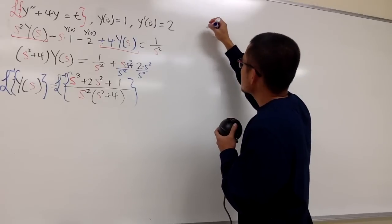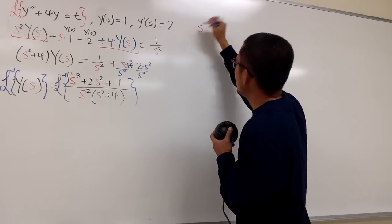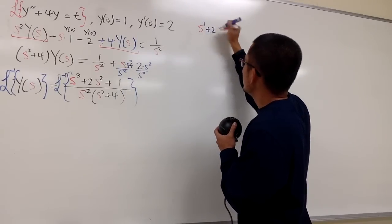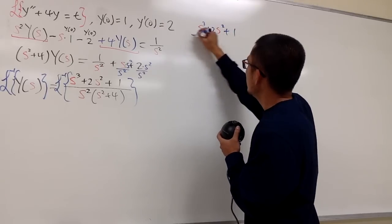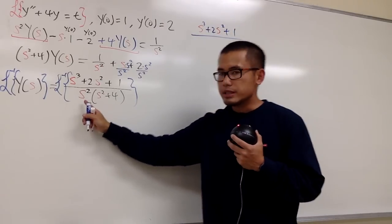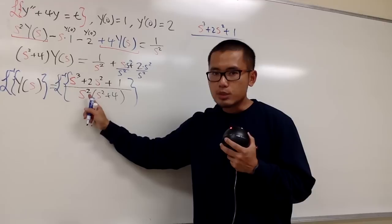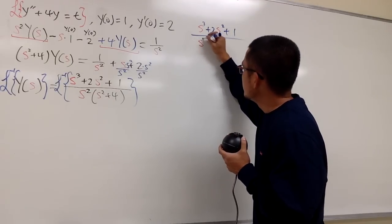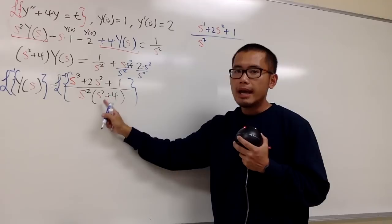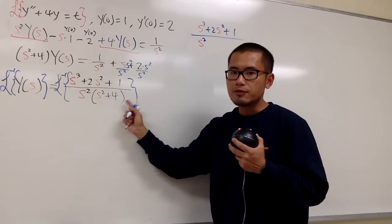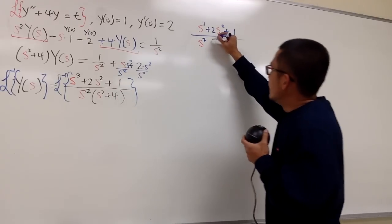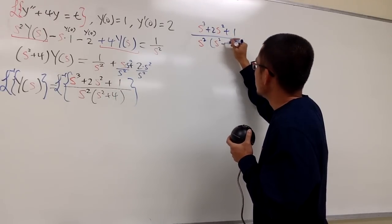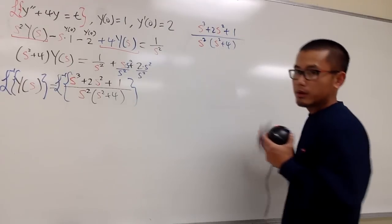We have s to the third power plus 2s squared plus 1, over s squared times s squared plus 4. Note that s squared means s times s, so keep that in mind — this is a repeated root. And this part, s squared plus 4, we cannot factor it, and it has complex roots, so keep that in mind as well.